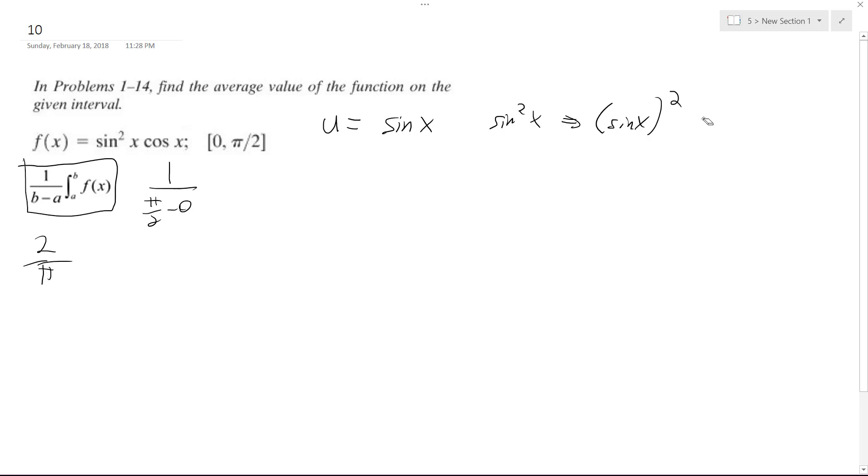Okay, so what we're going to have here—du is equal to 2 cosine x, and then to get dx, I take one-half du.